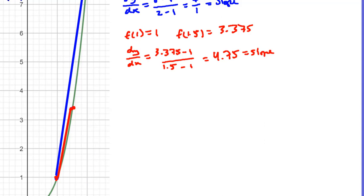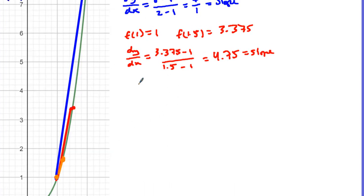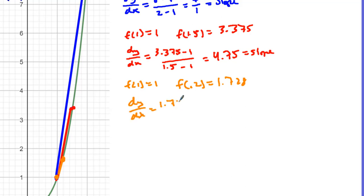Now let's look even deeper — let's take x = 1.2. We have a secant line from x = 1 to x = 1.2. f(1) = 1, and f(1.2) = 1.2³ = 1.728. The change in y over change in x is (1.728 − 1) / (1.2 − 1) = 0.728 / 0.2 = 3.64. That's getting closer and closer to the slope of the tangent line.